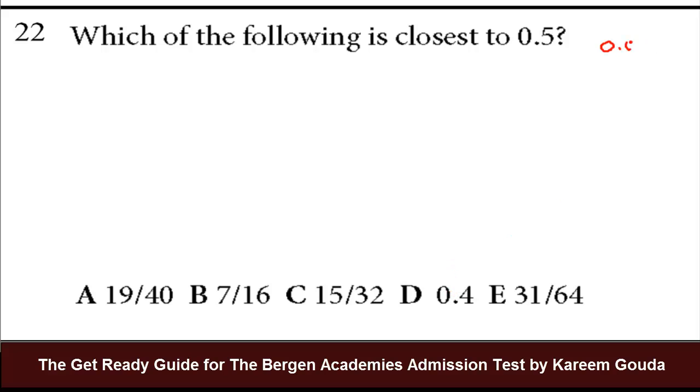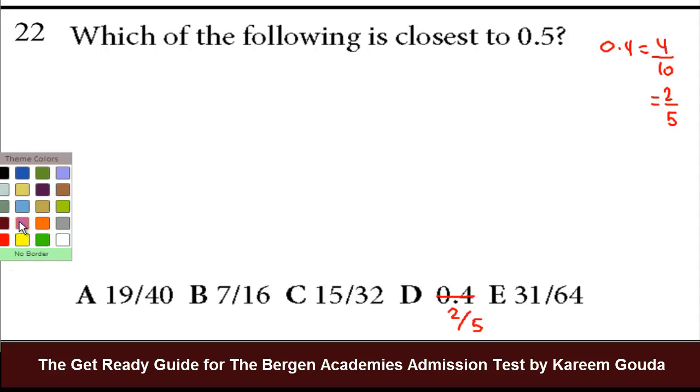0.4 is 4 over 10. If you simplify 4 over 10, divide up and down by 2, you get 2 over 5. So 0.4 can be rewritten as 2 over 5. Now I have 5 fractions. The question is, which of the following is closest to half? Using the word closest here means that you don't need to find the value of each of these fractions. You just need to know which one is closest to half.